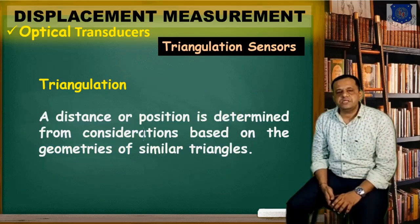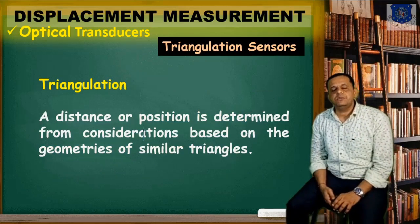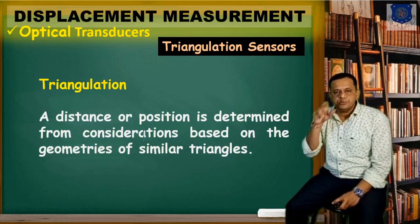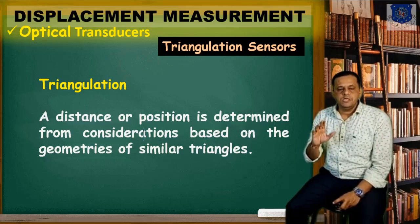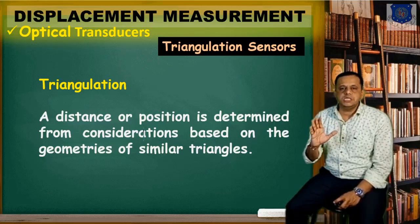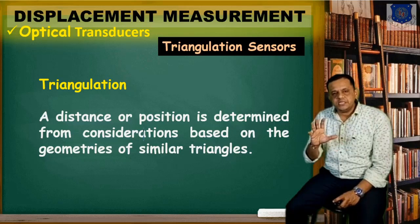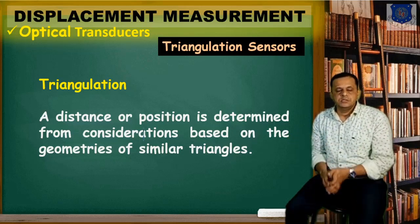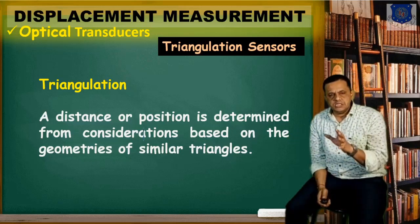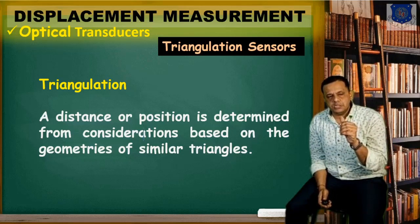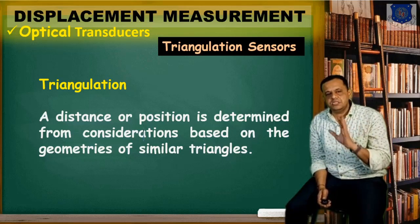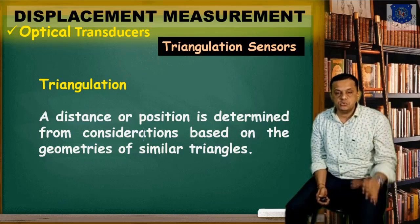Next is the triangulation sensor. Triangulation, as the name suggests, comes from the triangle. The distance or position is determined by comparing two similar triangles — this is the same single-triangulation principle we have studied previously.